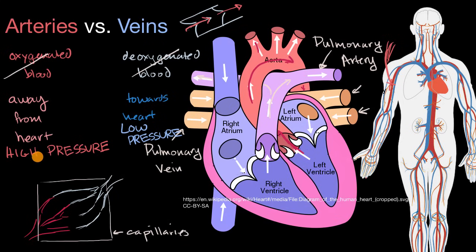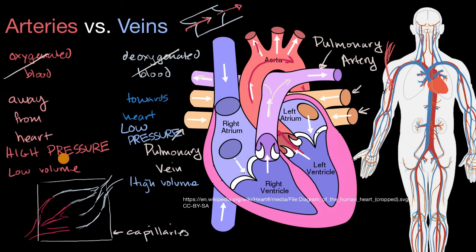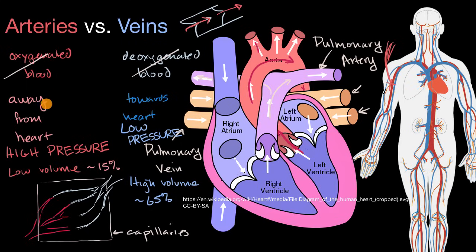Because arterial blood is under higher pressure, you need less volume to transport a fixed amount of blood, so arteries are low volume, while veins are high volume. Blood volume in arteries is only approximately 15% of total blood volume in your body, while veins hold closer to 65%. The remaining blood is about 5% in capillaries, 5% in the heart, and about 10% in the lungs. The big takeaway: arteries are vessels that take blood away from the heart, and veins are vessels that take blood towards the heart.